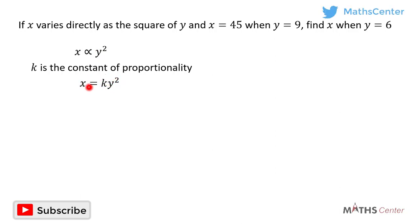So this is the equation connecting x and y. The question tells us that x is equal to 45 when y is equal to 9. We can use this information to find the value of k. X is equal to 45 when y is equal to 9. Let's substitute it into the equation we have here.